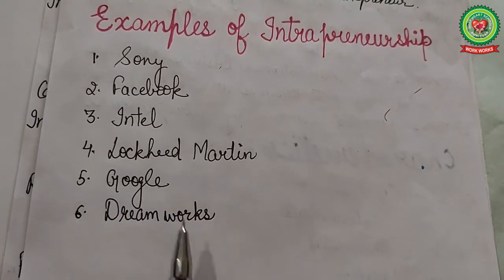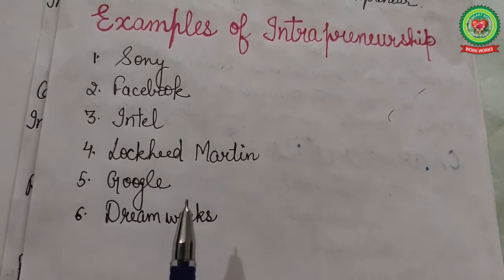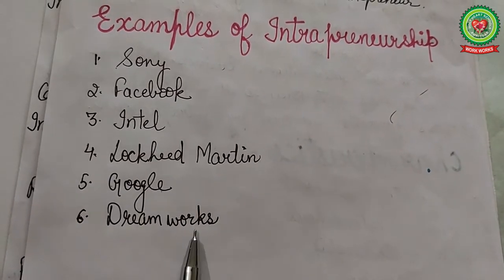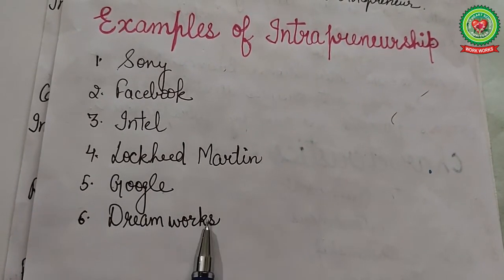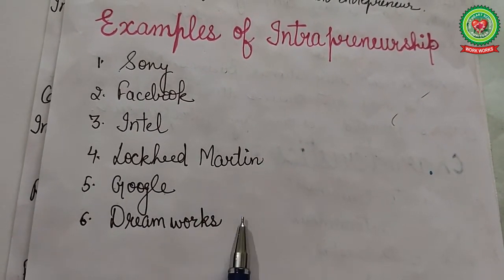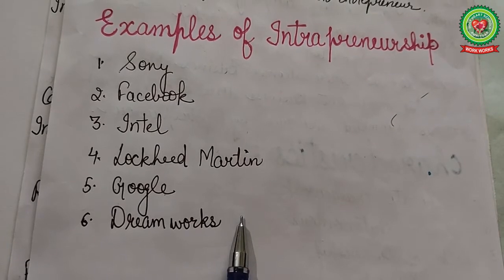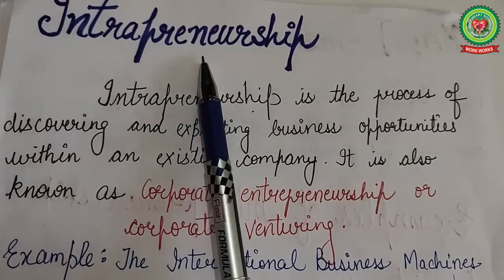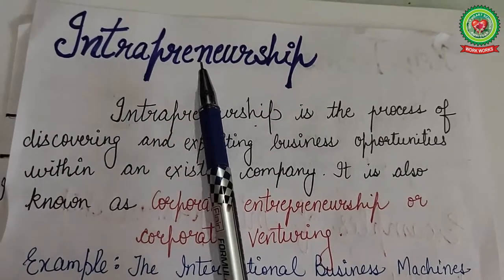Some examples of intrapreneurship include Sony, Facebook, Intel, Lockheed Martin, Google, and DreamWorks. These are companies that provide freedom to their employees to work as an entrepreneur.